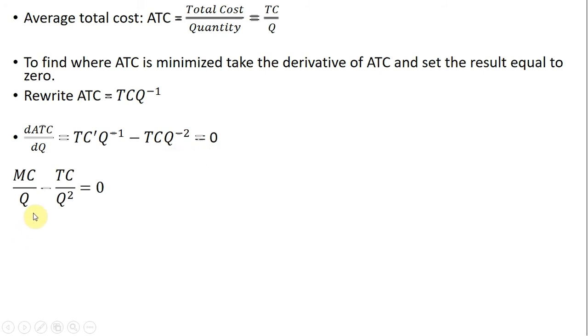And then next, we recognize that the derivative of total cost is just MC. So that's where this MC is coming from. And I move this Q to the minus one into the denominator, and then I move this Q to the minus two into the denominator.